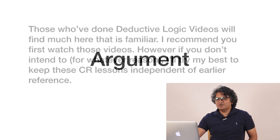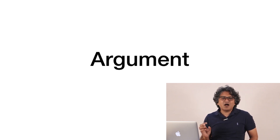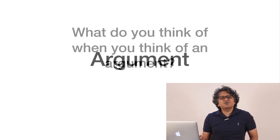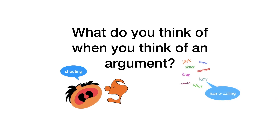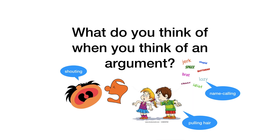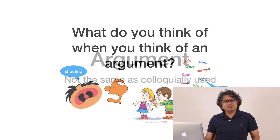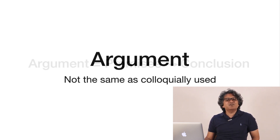One of the first things that is important when we want to do critical reasoning is the meaning of the word 'argument.' In deductive logic too, this word matters. Colloquially — meaning in everyday usage — the term 'argument' has a completely different meaning. Suppose I ask you what an argument means; your reply would be: difference of opinion, people fighting, people calling names, and so on. That is the usual meaning of the word. However, in reasoning — whether critical reasoning, deductive, or logic per se — the meaning is different.